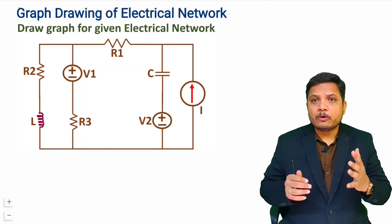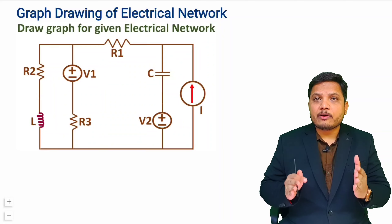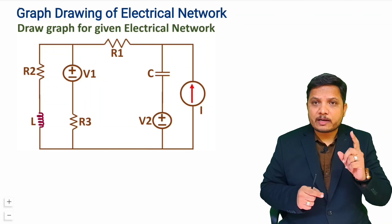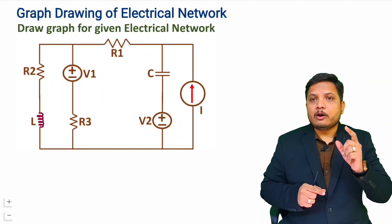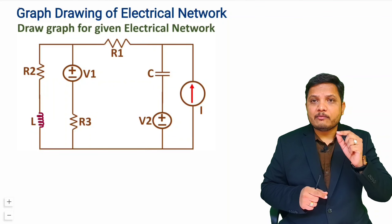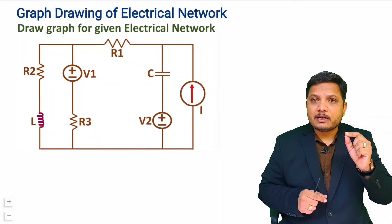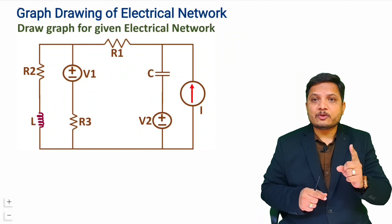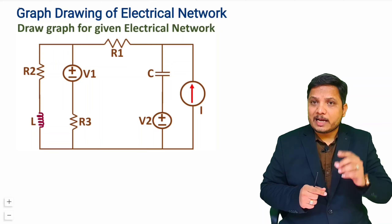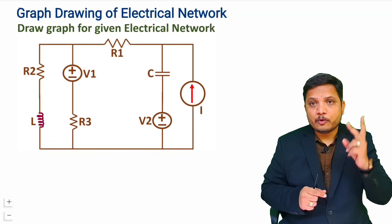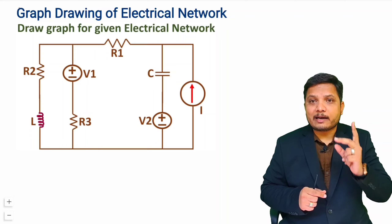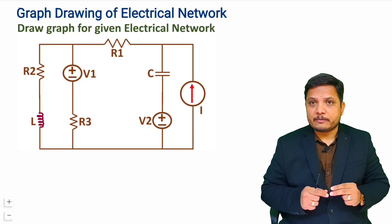Whenever we draw a graph for any electrical network, first of all you need to provide voltage sources as short circuit and current sources as open circuit. That is the first thing you should do — voltage sources as short circuit and current sources as open circuit.